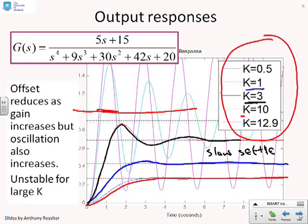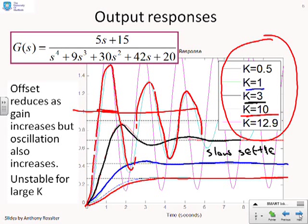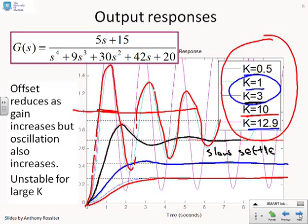If I now go to K = 10, I've got very substantial oscillation and a very slow settling time. And finally, at K = 12.9, the oscillation isn't really settling at all — it wants to oscillate on and on. Indeed, if K is chosen larger than this, the response diverges. So there seems to be a middle ground: somewhere between K = 1 and 3 is about the best you can do before oscillation begins to dominate and the decay becomes too slow.